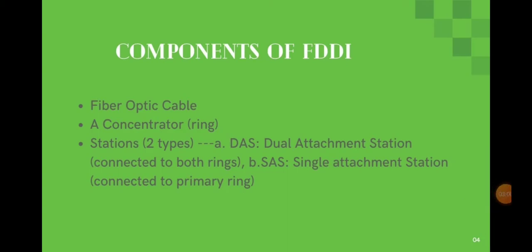The components of FDDI include fiber optic cable, a concentrator or ring, and stations. There are two kinds of stations: SAS, or Single Attachment Station, which is connected to the primary ring alone, and DAS, or Dual Attachment Station, which is connected to both the primary and secondary rings.